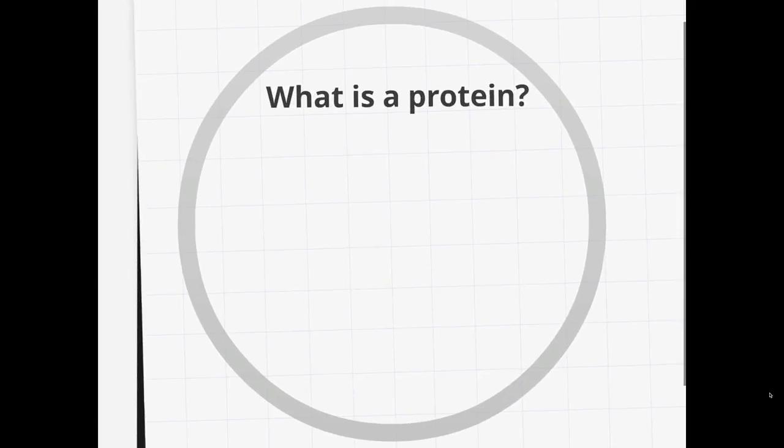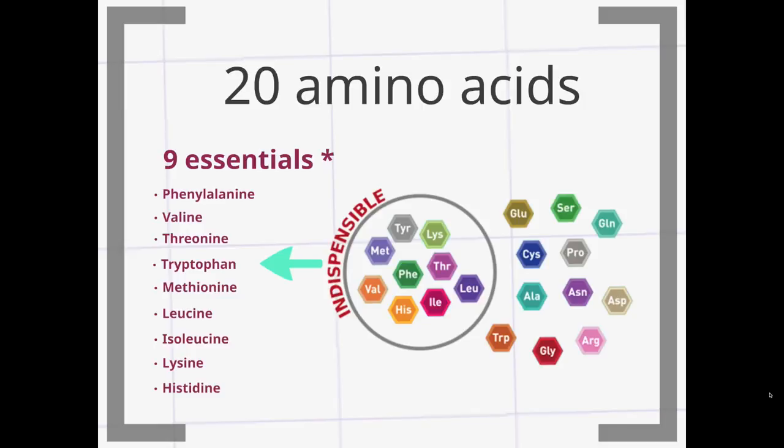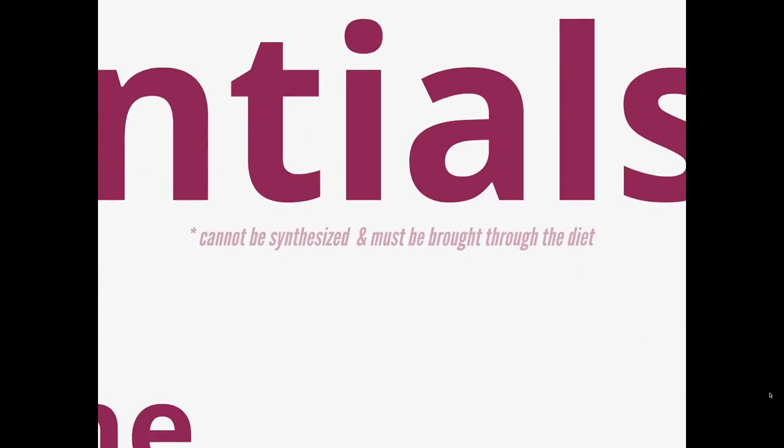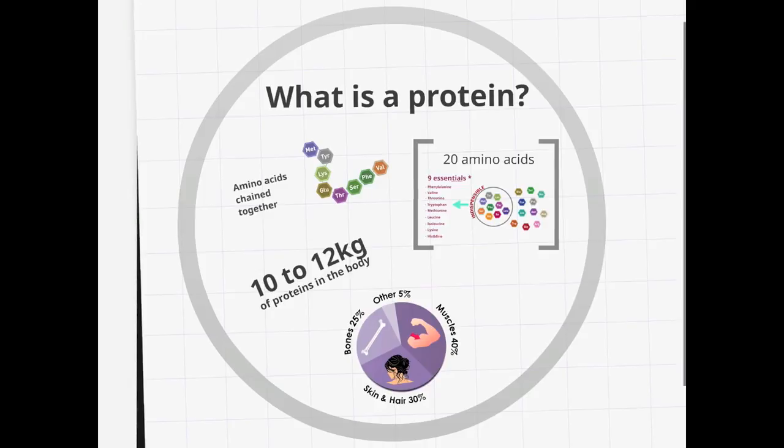A protein is made up of basic elements, amino acids, chained to one another. There are 20 amino acids that are found in proteins, and among them, 9 are essential for the organism. An essential or indispensable amino acid is an amino acid that cannot be synthesized by the organism, and therefore must be supplied in its diet. There is approximately 10 to 12 kilograms of proteins in the body.